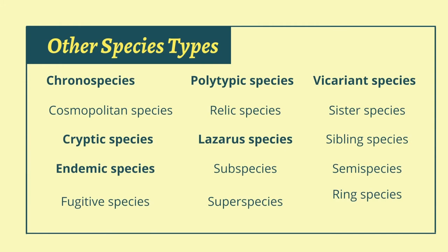During our course in biosystematics, we will encounter different species types. Those in bold — chronospecies, polytypic species, vicariant species, cryptic species, lazarus species, and endemic species — are left for you to define. We also have others like cosmopolitan species, relic species, and sister species, which will be defined as we go along the course. This brings us back to the question: what is a species? What defines a species? That is for you to answer.